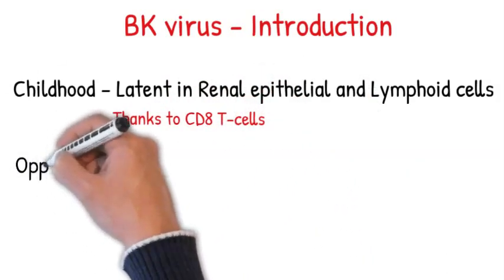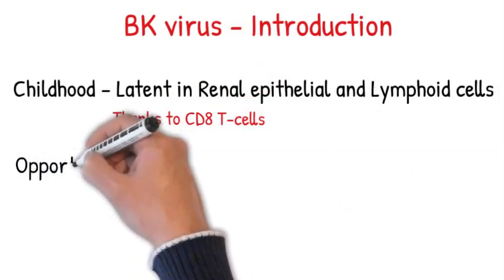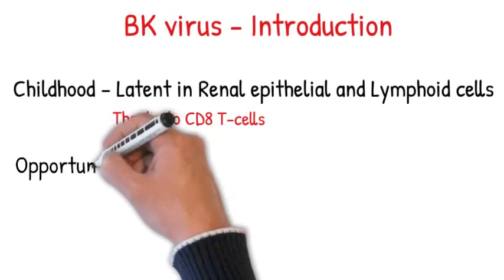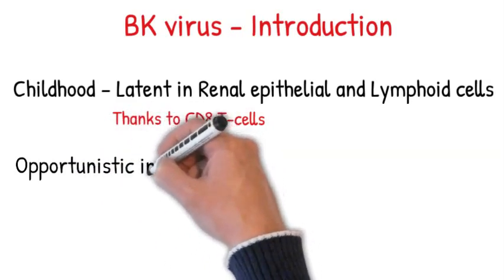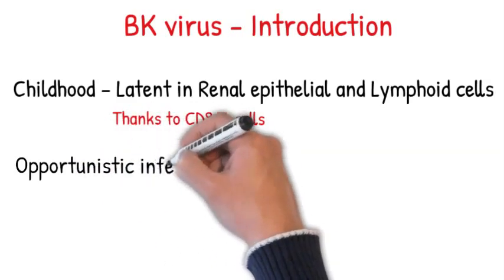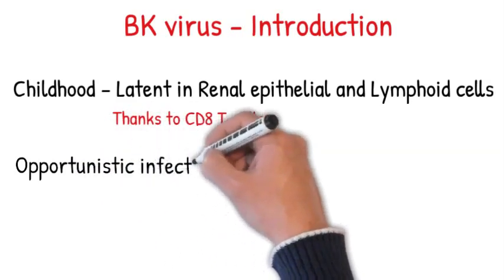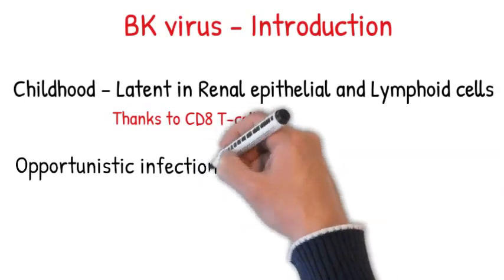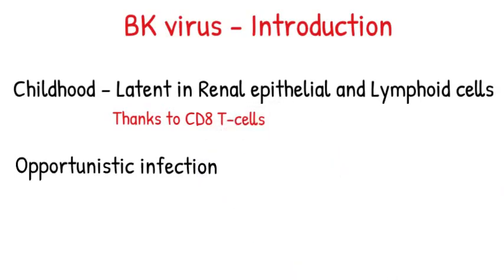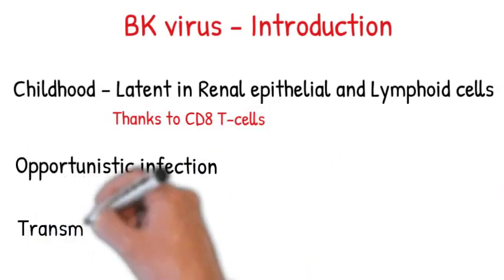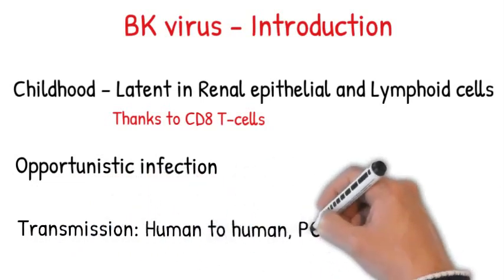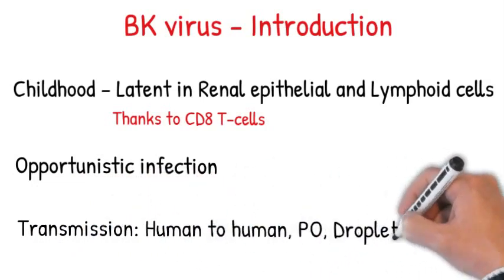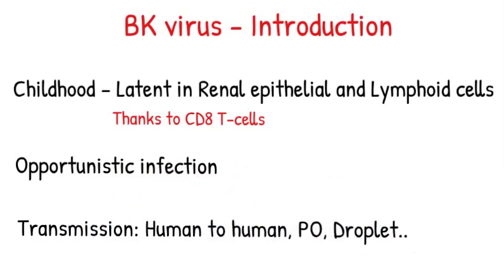BK is an opportunistic infection, meaning it takes the opportunity with the suppression of our immune system — for example, with medication after organ transplant — and flares up. With the disappearance of the cat, the rat flares up. Methods of transmission are variable; it spreads human to human including by oral route, droplets, and others.